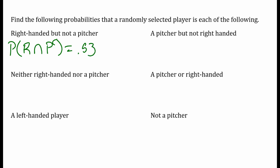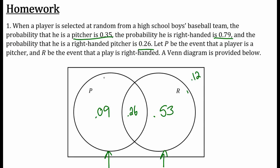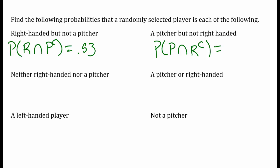A pitcher but not right-handed. So the probability of pitcher and not right-handed, the complement of right. That comes out to be pitcher, but I don't want to include the right-handed ones. 9%, 0.09.